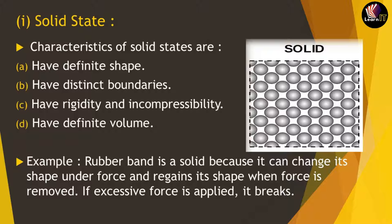Let us discuss the characteristics of the solid state. First, solids have a definite shape — a fixed arrangement. Second, they have distinct boundaries, meaning their structure is definite. Third, they have rigidity and incompressibility. Rigidity means the inability to bend or be forced out of shape — a solid cannot change its shape. Incompressibility means the solid cannot be compressed; if it is compressed, it will lose all its shape and size.